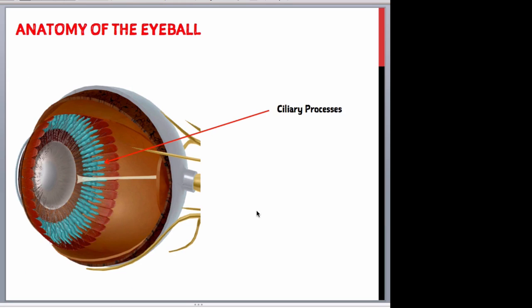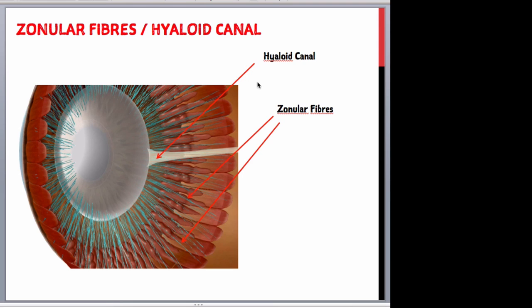This is a more posterior-medial 3D representation of the eyeball. The ciliary processes, seen here in blue, are folds or protrusions on the internal surface of the ciliary body. They contain blood capillaries that secrete aqueous humour — the transparent watery liquid that nourishes the lens and the cornea. This is a close-up of the zonular fibres, seen here in blue, also known as the zonules of Zinn, which play an important part in changing the shape of the lens along with the ciliary muscles.